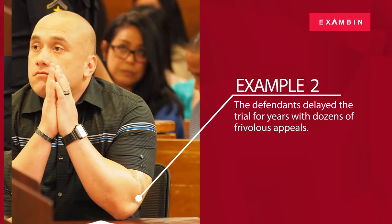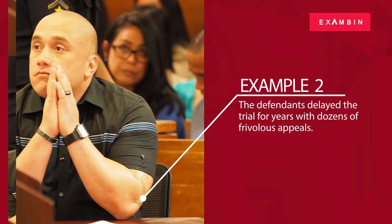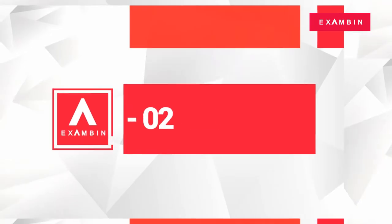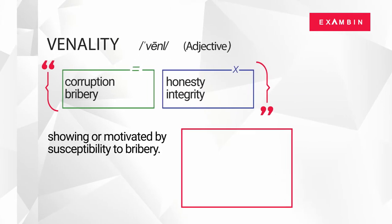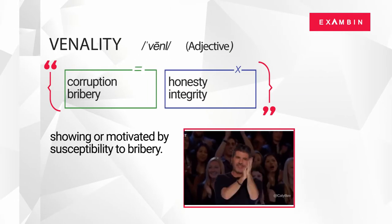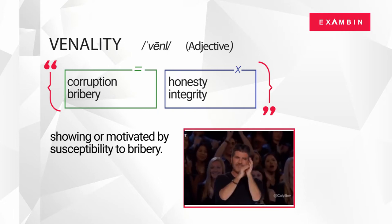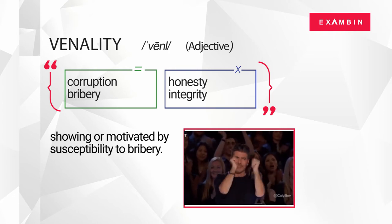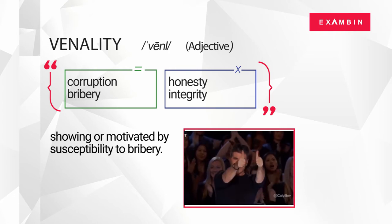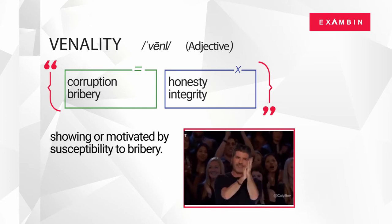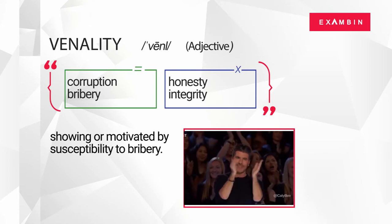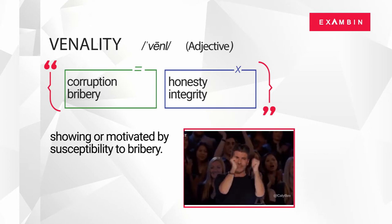The second word of the day is venality. The word venality is a noun. The direct synonyms of venality are corruption and bribery. In general context, the word venality means showing or motivated by susceptibility to bribery. Honesty and integrity are some of the terms referring to the opposite meaning of venality.